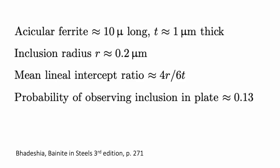There is a very simple reason. If you take account of the size of acicular ferrite plates — typically 10 micrometres in length and 1 micrometre thick — and an inclusion typically should not have a size much greater than 0.2 micrometres, because you don't want the inclusions themselves to act as cleavage fracture nucleation sites, then from stereology you can show that the mean linear intercept is 4 times the radius of the inclusion over 6 times the thickness of the plate. So the probability of observing an inclusion in a plate is really quite small: 0.13. So even if the plate contains an inclusion, when you look at a two-dimensional section of the microstructure, you may not see the inclusion.